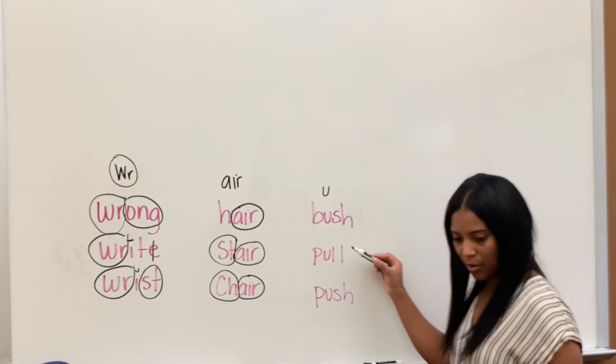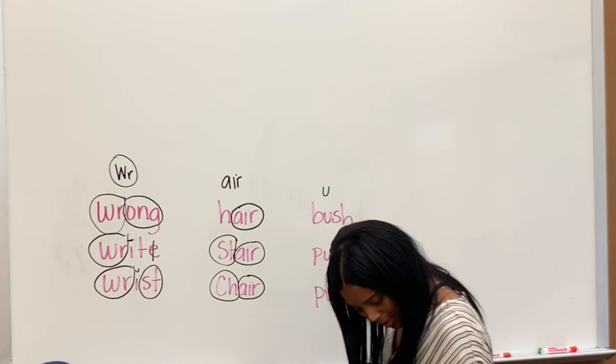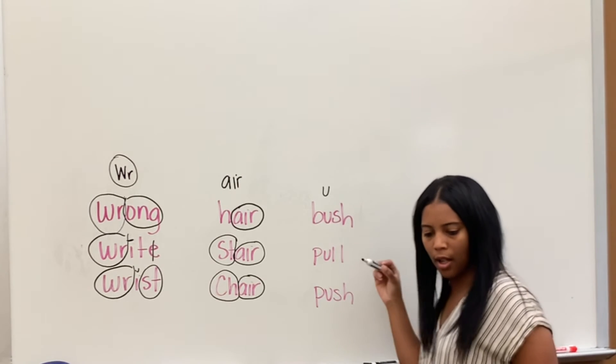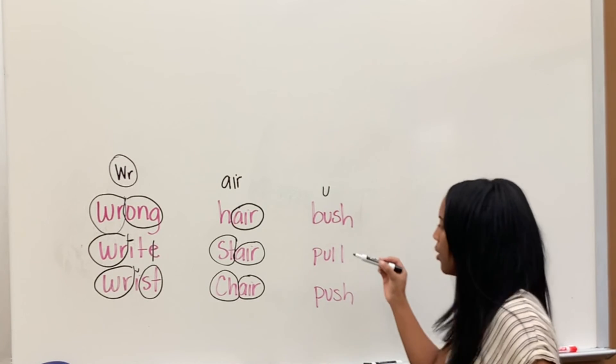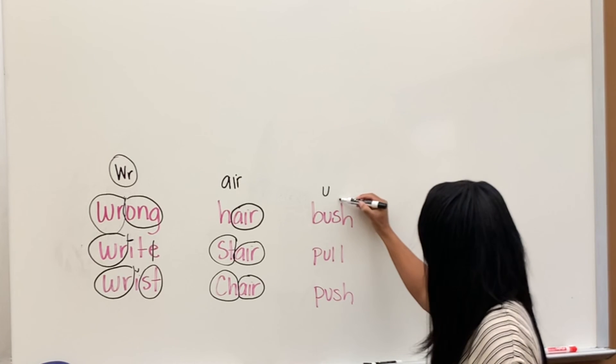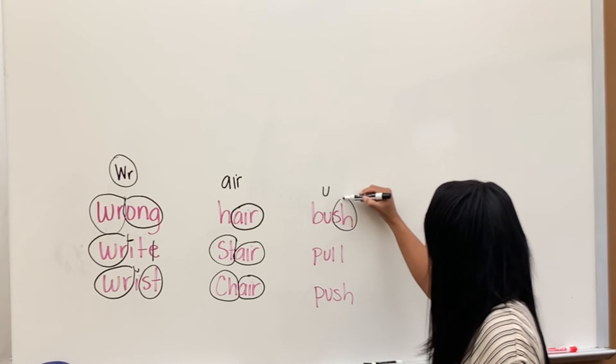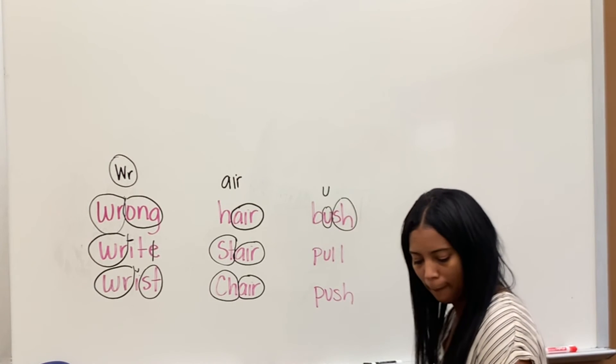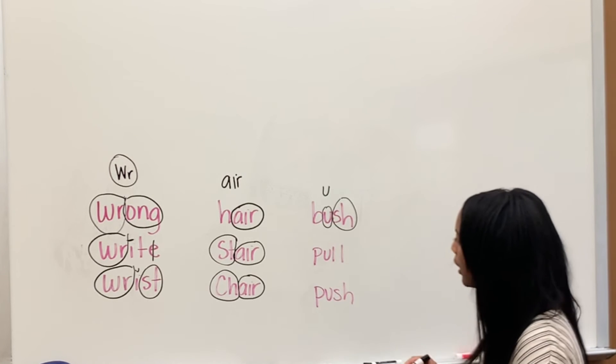All right, last one. Last sound is U that says U like in push. Okay, go ahead, Josiah, what are my sounds? SH. Good, and? U. U that says U, what's the word? Bush. Bush. Bush. Good, next one.